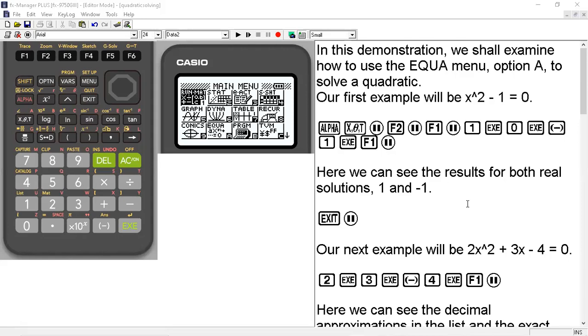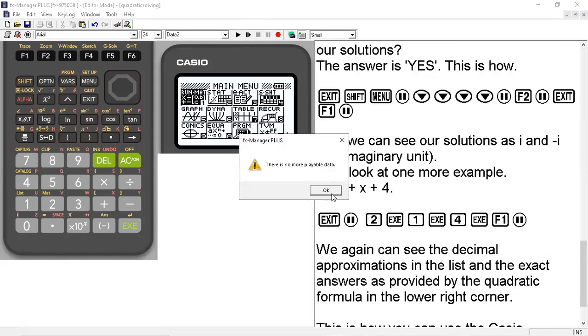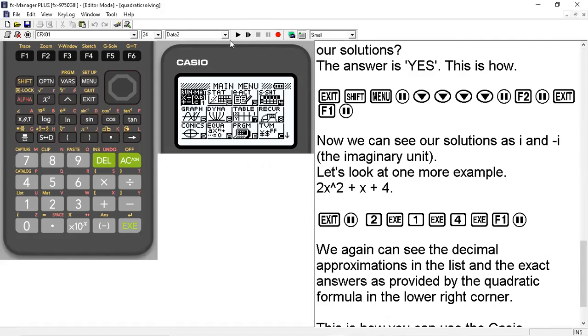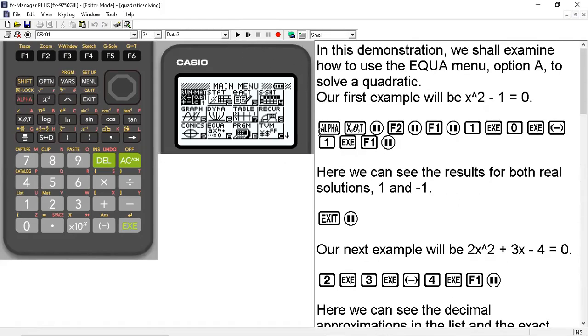Our first example will be x² - 1 = 0. So we'll go ahead and start here.